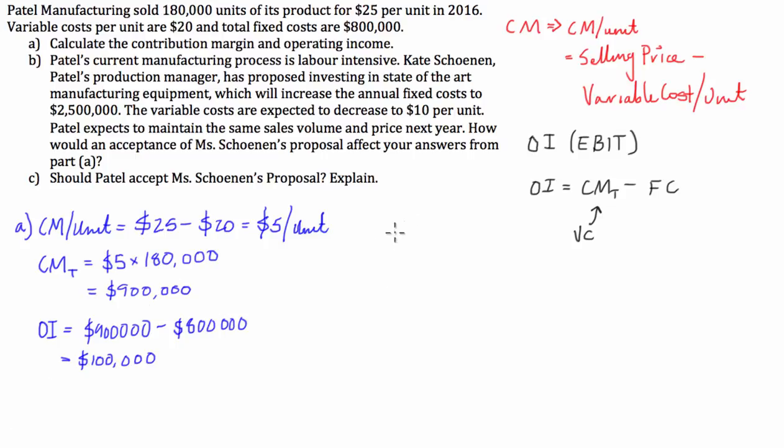So next part, part B. Patel's current manufacturing process is labour-intensive. Ms. Schoenen, Patel's production manager, has proposed investing in state-of-the-art manufacturing equipment, which will increase the annual fixed cost to $2.5 million. However, the variable costs are expected to decrease to $10 a unit. Patel expects to maintain the same sales volumes and price next year. How would acceptance of Ms. Schoenen's proposal affect your answers from part A?